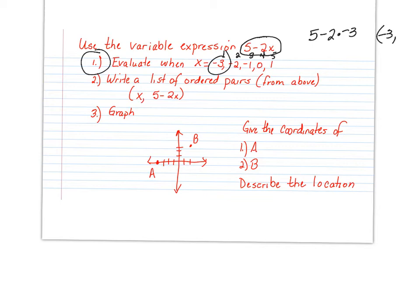So now, we've got to keep-change-opposite and follow our order of operations. We've got to multiply first. So, we have 5 plus 6. So, my answer is 11. That is what my y value is going to come out to be. So, that's one ordered pair.